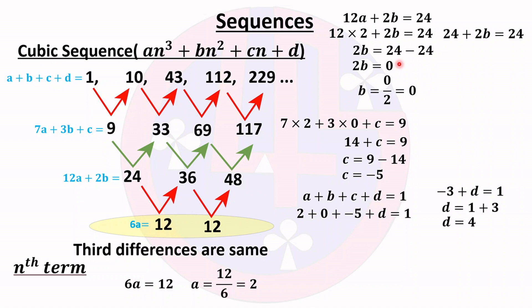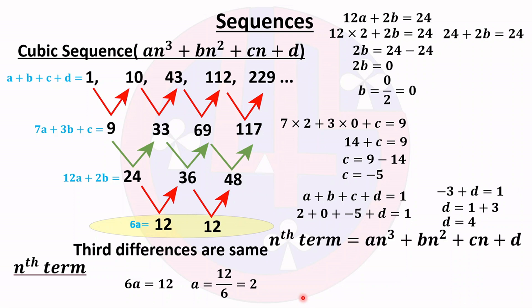Now we have all values: a = 2, b = 0, c = −5, and d = 4. Since b = 0, the bn² term disappears. The nth term is therefore 2n³ − 5n + 4.